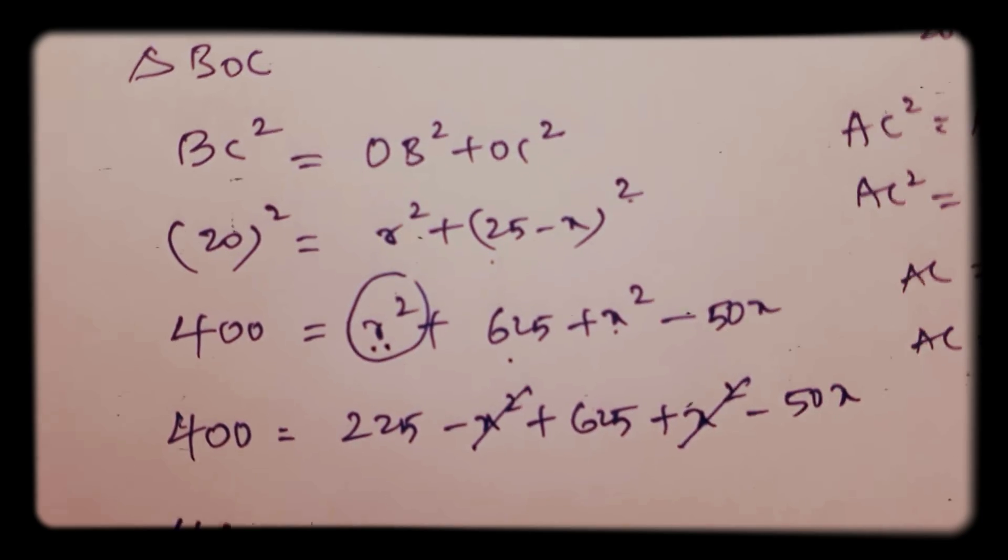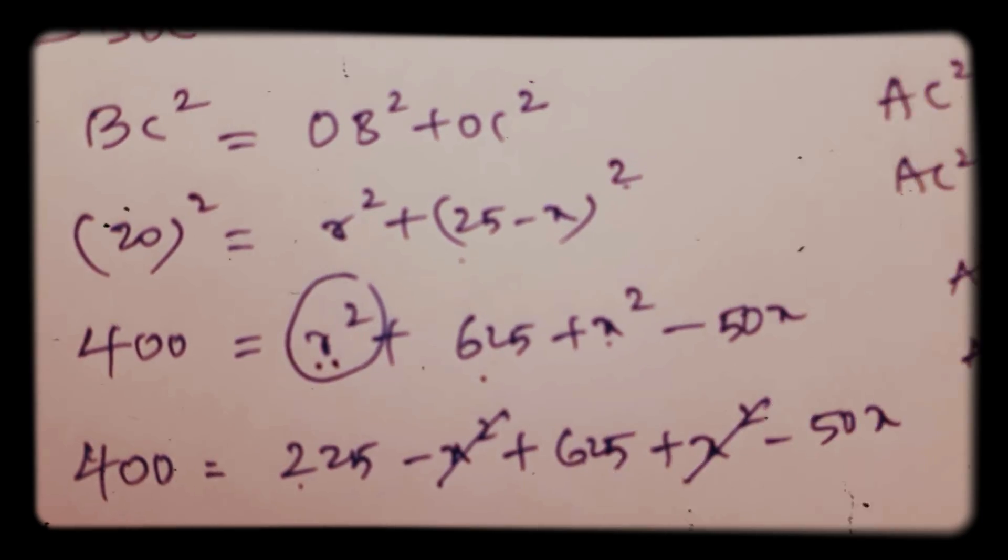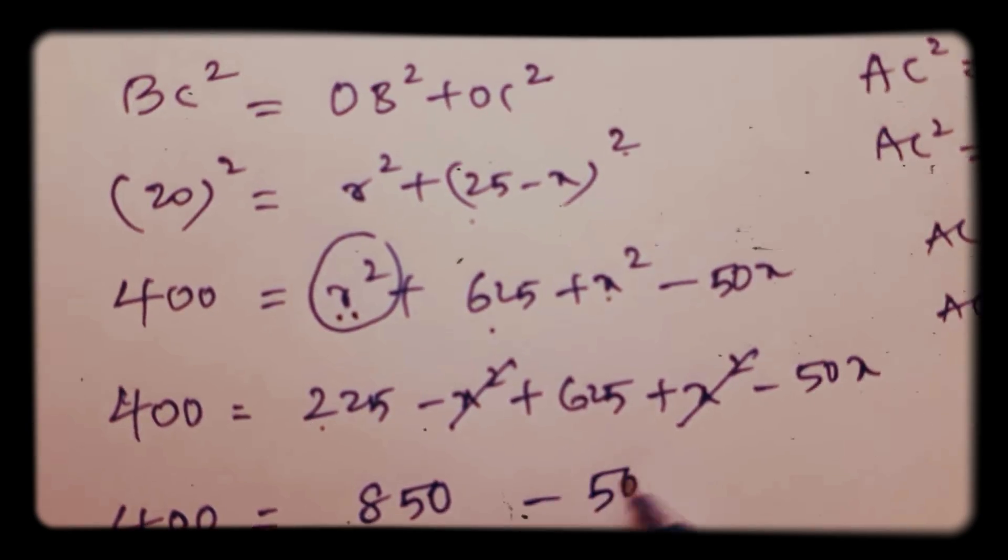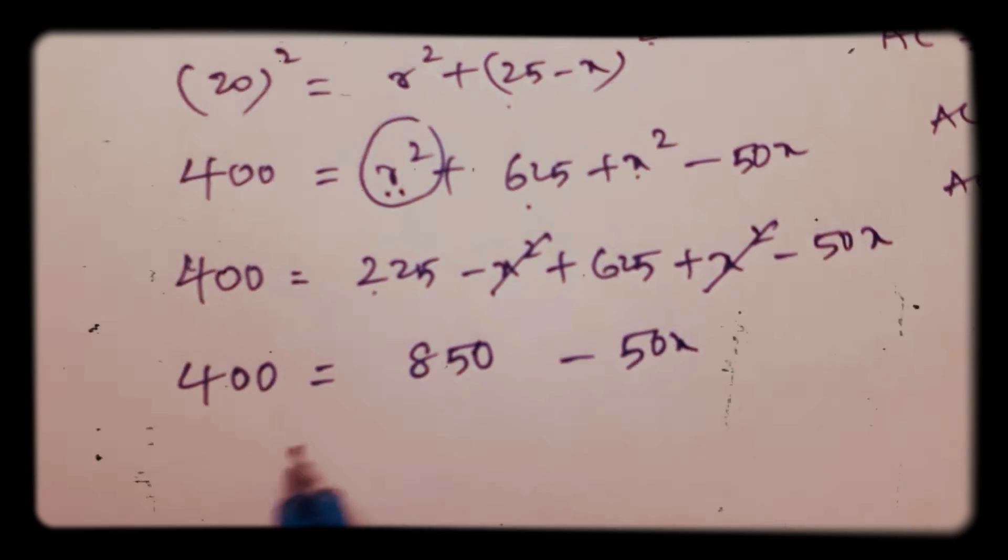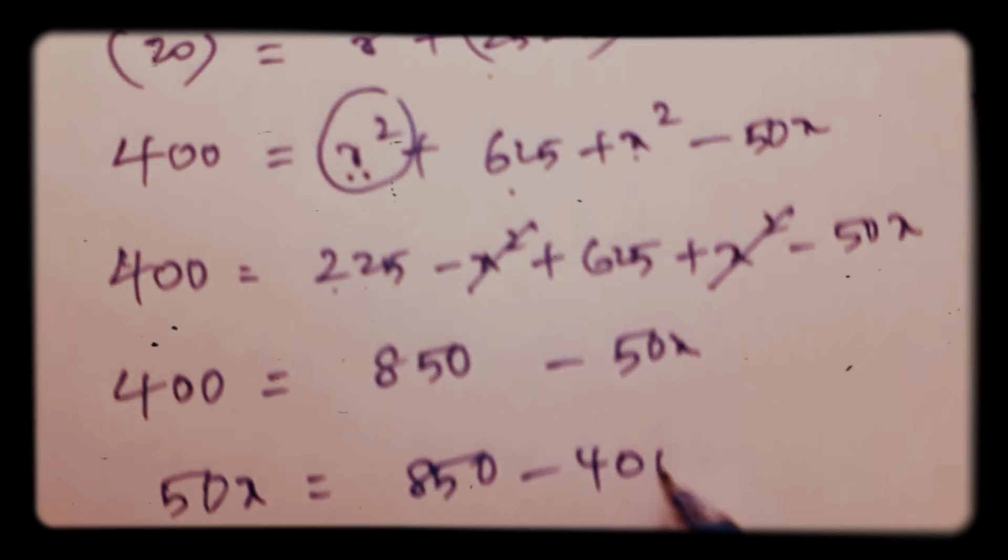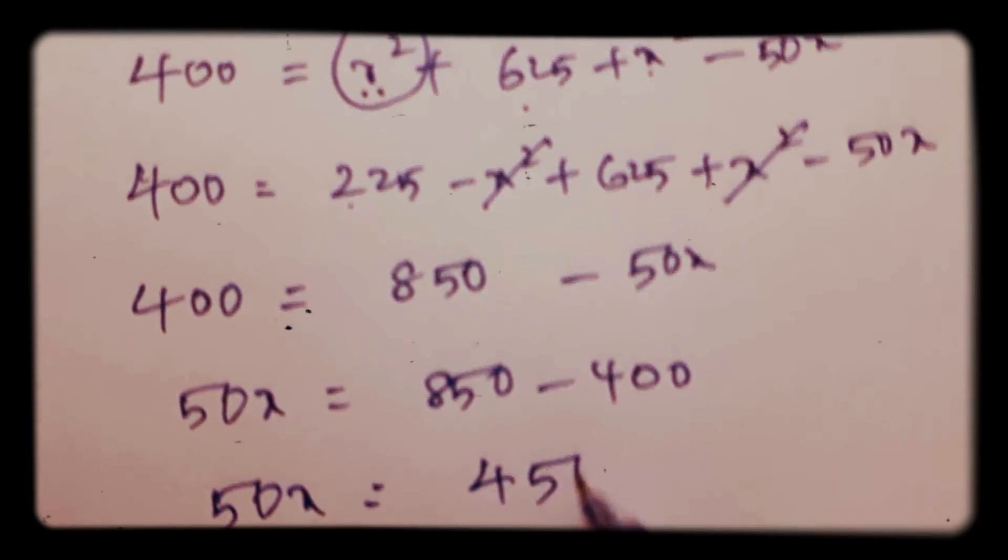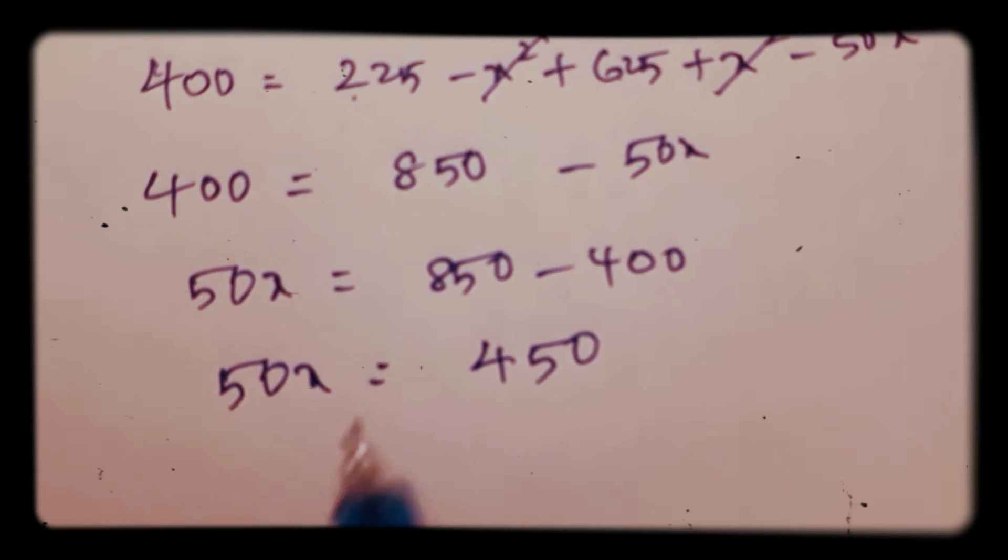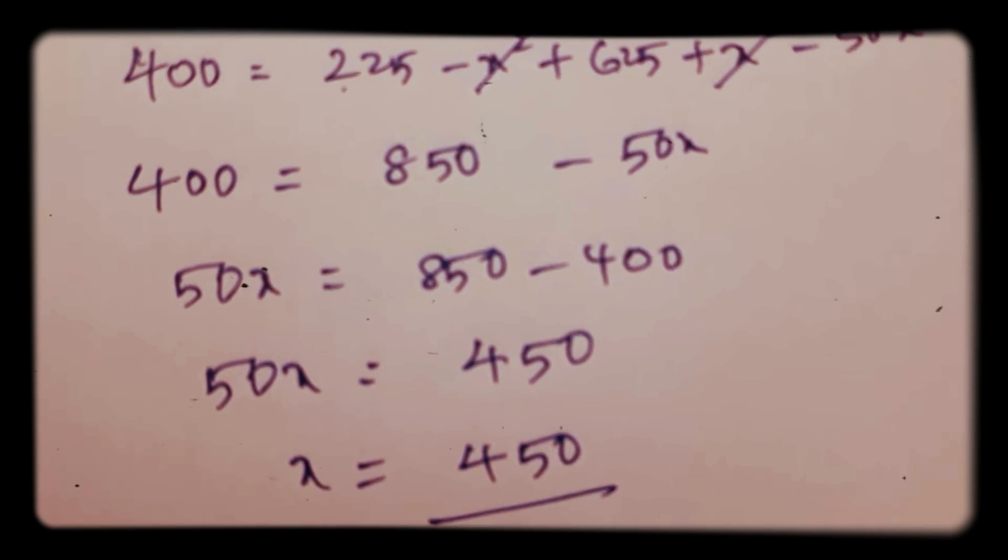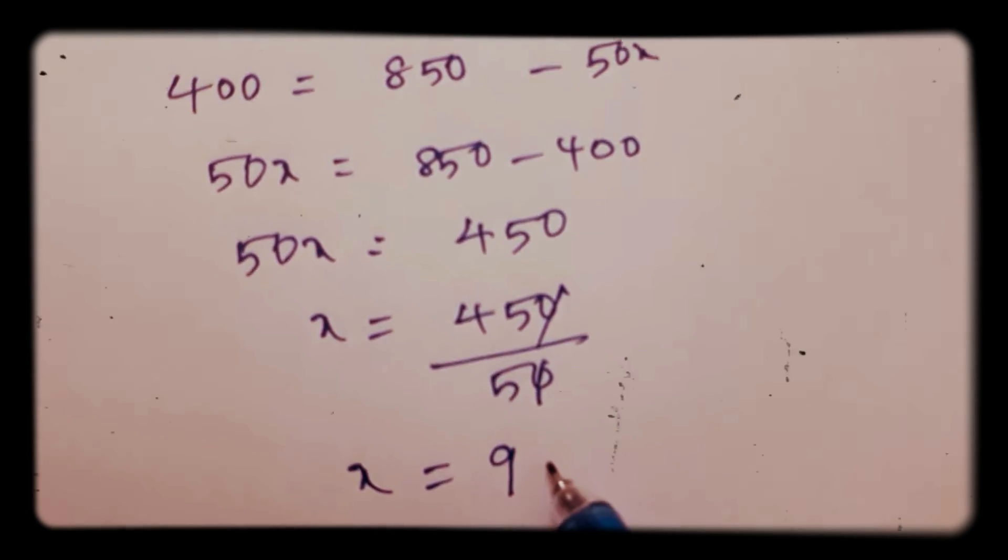X minus X square plus X square will get cancelled. 400 equals 850 minus 50X. X equals 9 centimeters.